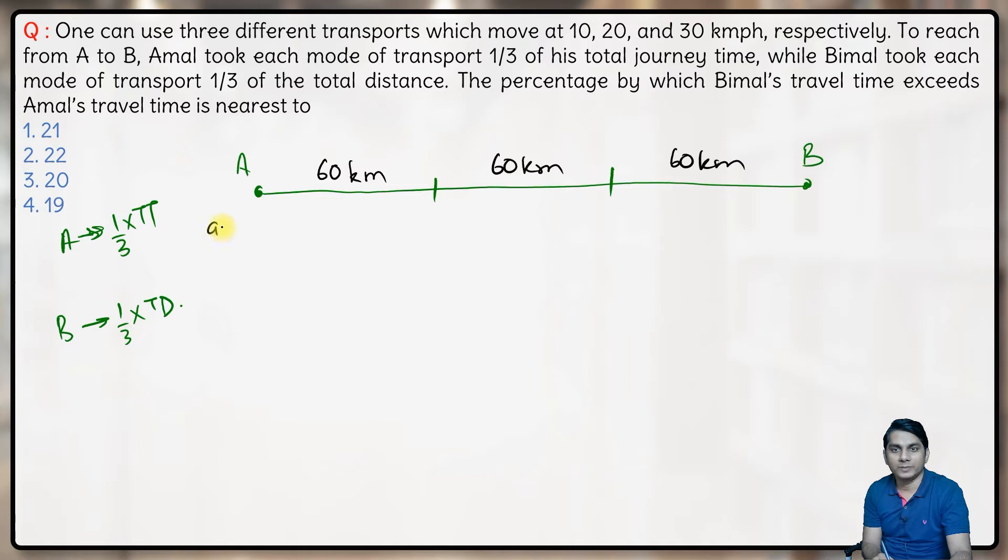That means the average speed of Amal will be 20 kilometers per hour for the whole journey.